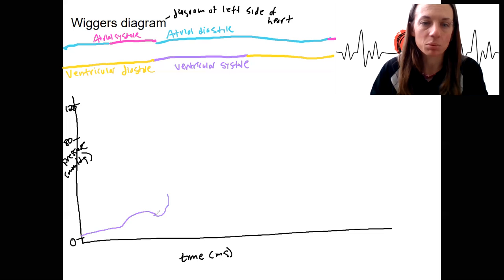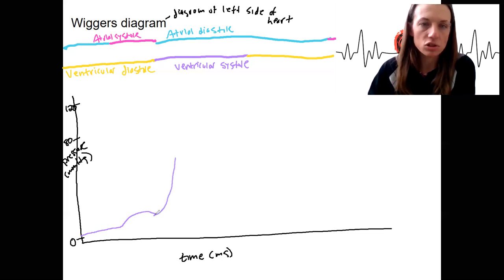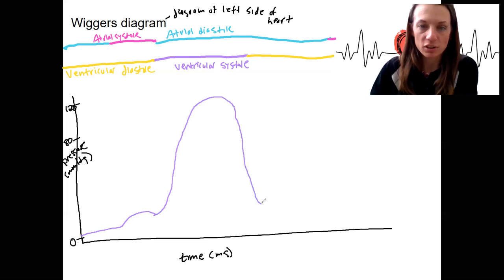But then really the most important thing is this huge increase due to isovolumic contraction, followed by a sharp drop due to ventricular ejection. So during ventricular systole, we've got a sharp rise in pressure and then a sharp decrease in the left ventricle. Right ventricle as well, but not to the same extent, not the 120.